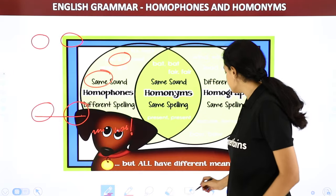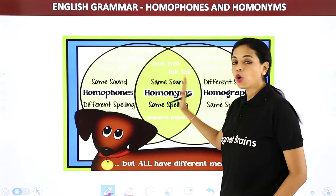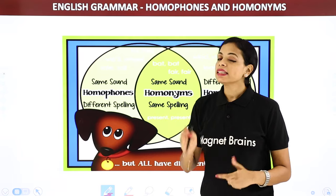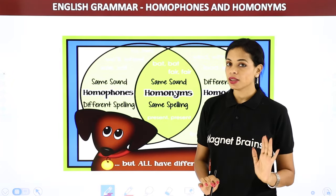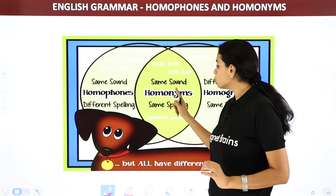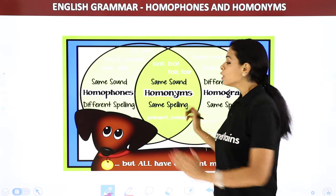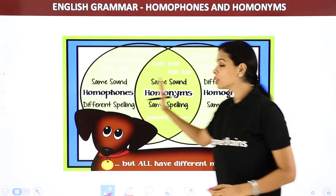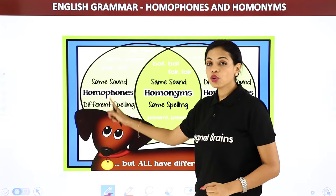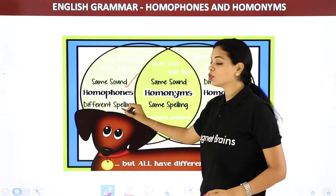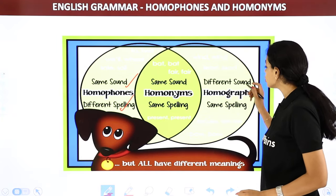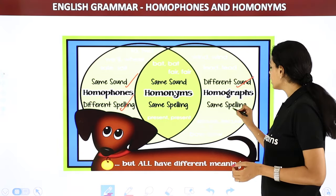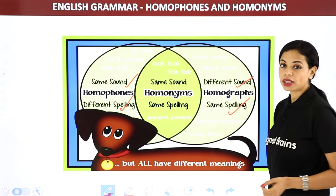So now we have understood: homonyms are words whose sound is the same or spelling is the same, but meanings are always different. This is the umbrella term. Under it come homophones — same sound, different spelling — and homographs — spelling always the same, pronunciation may or may not be the same, but meaning is always different.